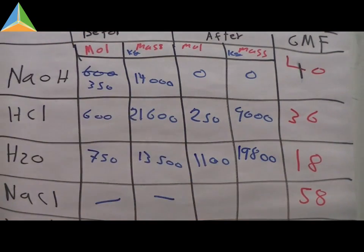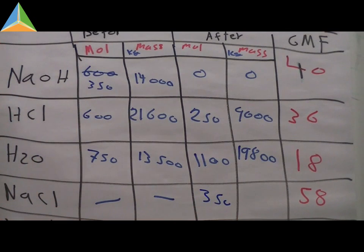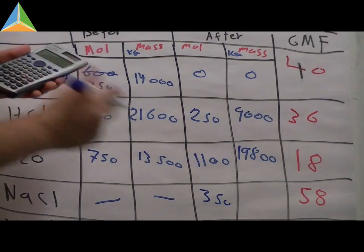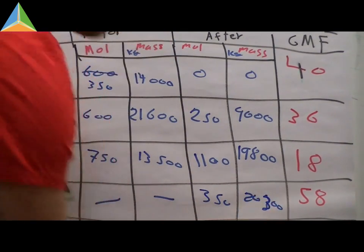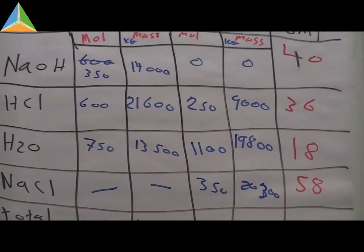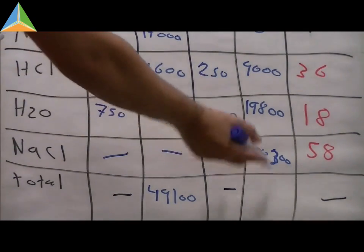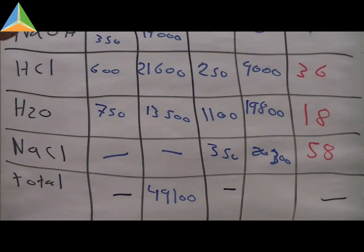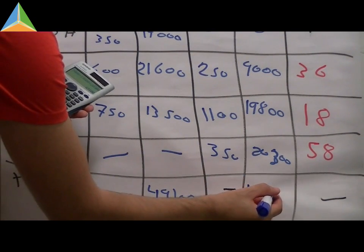The amount of NaCl created is 350 moles; 350 times 58 equals 20,300 kg. Now we calculate the total output mass: 9,000 plus 19,800 plus 20,300, which equals 49,100 kg.